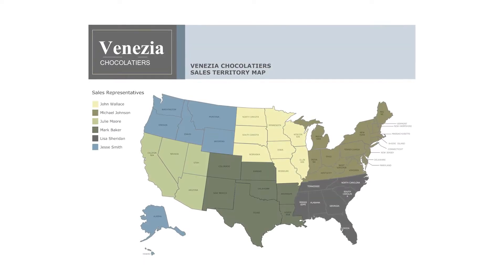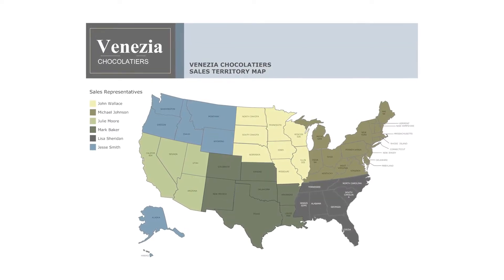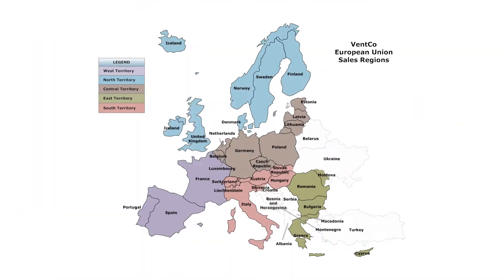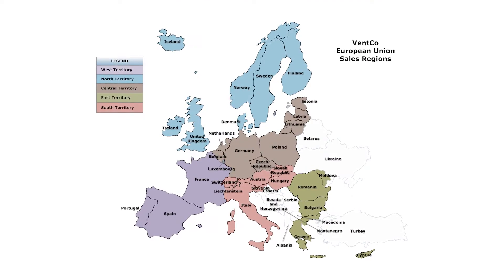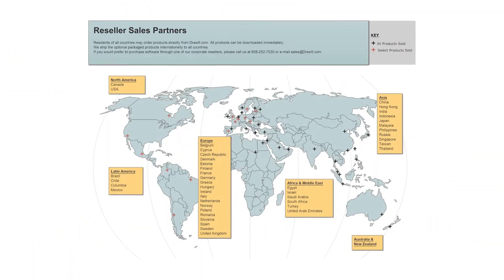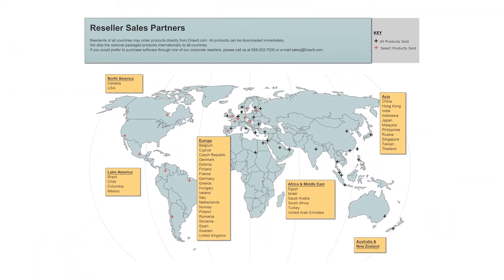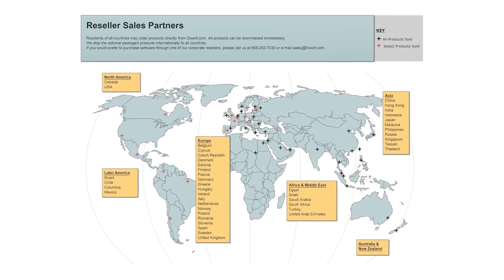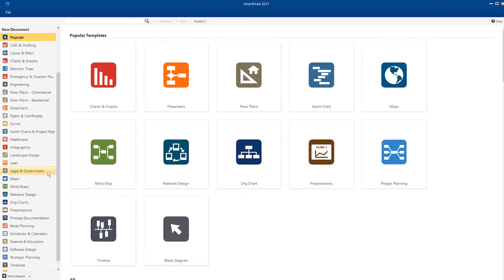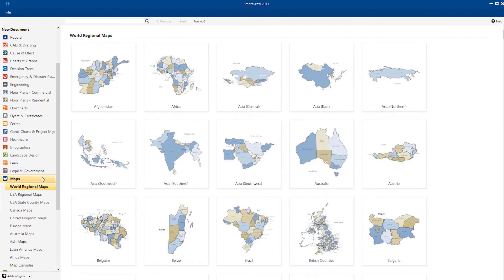Sales territory maps are an essential element of any regional, national, or global sales force. With its comprehensive library of world maps, unique customization tools, and great looking templates, SmartDraw will be a welcome addition to your sales team wherever they operate.